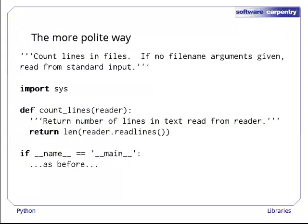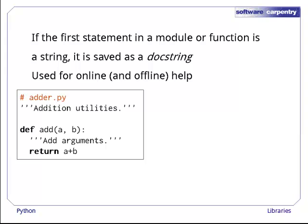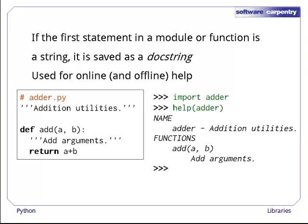Here's a more polite way to write the programs we just created. If the first thing in a module or function, other than blank lines or comments, is a string that isn't assigned to anything, Python saves it as the documentation string or docstring for that module or function. These docstrings are what online and offline help display. For example, let's create a file adder.py with a single function add and write docstrings for both the module and the function. If we then import adder, help of adder will print out all of its docstrings, the documentation for the module itself and for all of its functions. We can also be more selective and only display the help for a particular function instead.